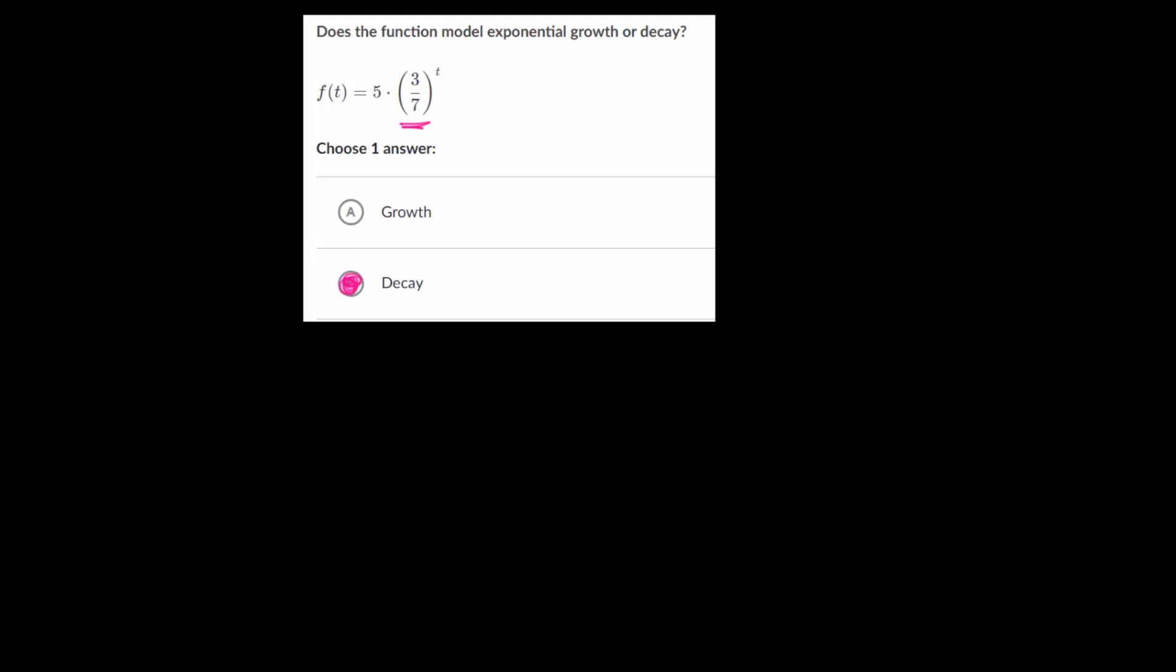And again, you can see this by just plugging in different values. In this case, we have t and our function f of t. So if we plug in 0, 3 sevenths to the 0 power is just 1. So you get 5. This number, remember, is always your starting value at, in this case, times 0. If we plug in 1, you get 3 sevenths to the first, which is just 3 sevenths, times by 5.